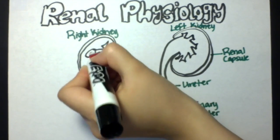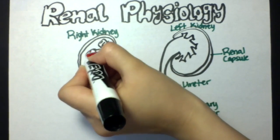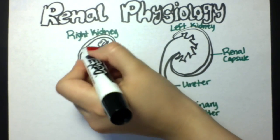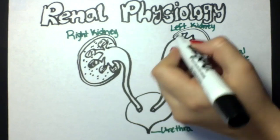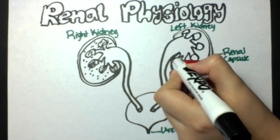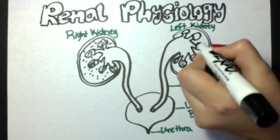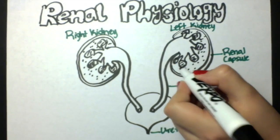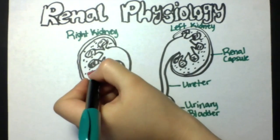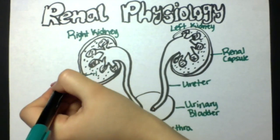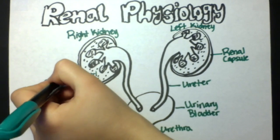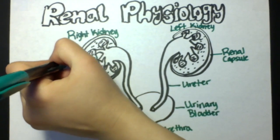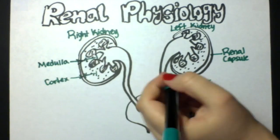They have regulatory functions such as regulating water balance, electrolyte balance, and acid-base balance. They also have endocrine functions including secreting erythropoietin, renin, and prostaglandins. They also have metabolic functions which includes converting inactive vitamin D into active vitamin D.